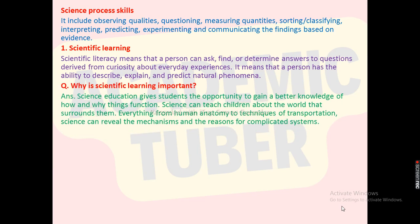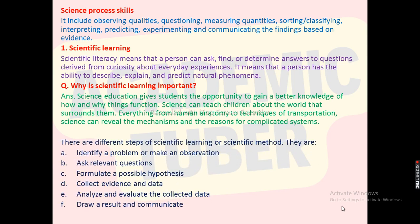Why is scientific learning important? Science education gives students the opportunity to gain better knowledge of how and why things function. Science can teach children about the world that surrounds them — everything from human anatomy to techniques for transportation. Science can reveal the mechanisms and reasons for complicated systems. The steps of the scientific method are: identify a problem or make an observation, ask relevant questions, formulate a possible hypothesis, collect evidence and data, analyze and evaluate the collected data, draw a result, and communicate.